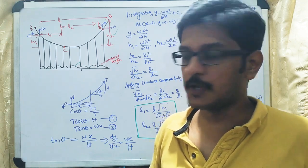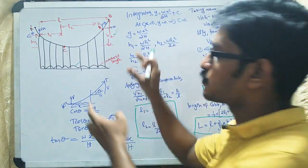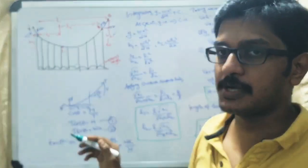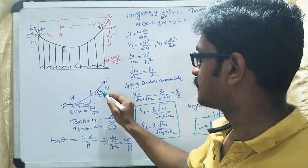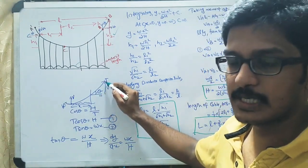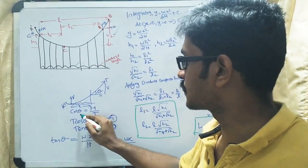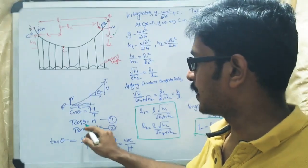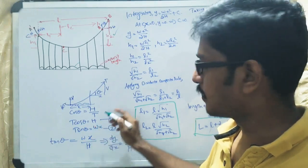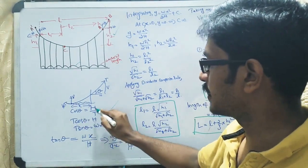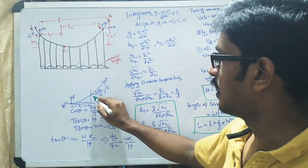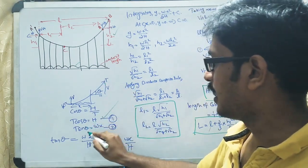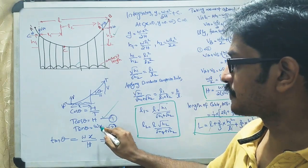Our intention is to formulate the length of cable and the horizontal thrust. Let us take a small section of the cable. If T is the tension at that section, then cos θ = H/T, so T cos θ = H. And T sin θ = w·x, because the total UDL force acting over the horizontal distance x is w·x.